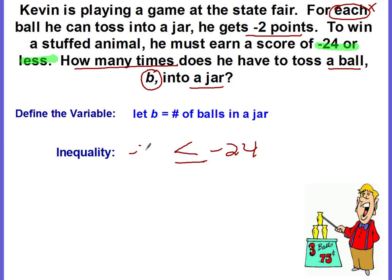So we're going to multiply negative two times the number of balls. So our variable is B. So negative 2B is less than or equal to negative twenty four. This is our inequality statement. And then you would go ahead and solve it. And remember, because we're dividing by a negative to both sides, you would have to switch the inequality.